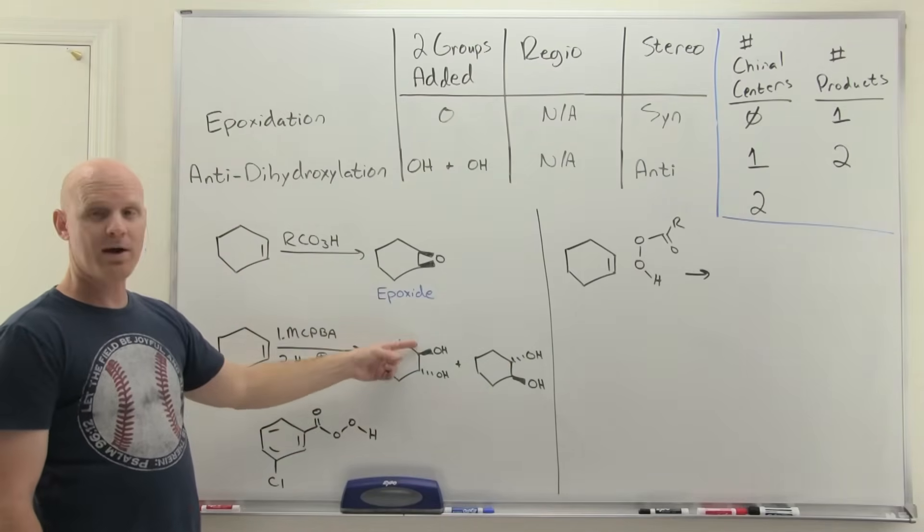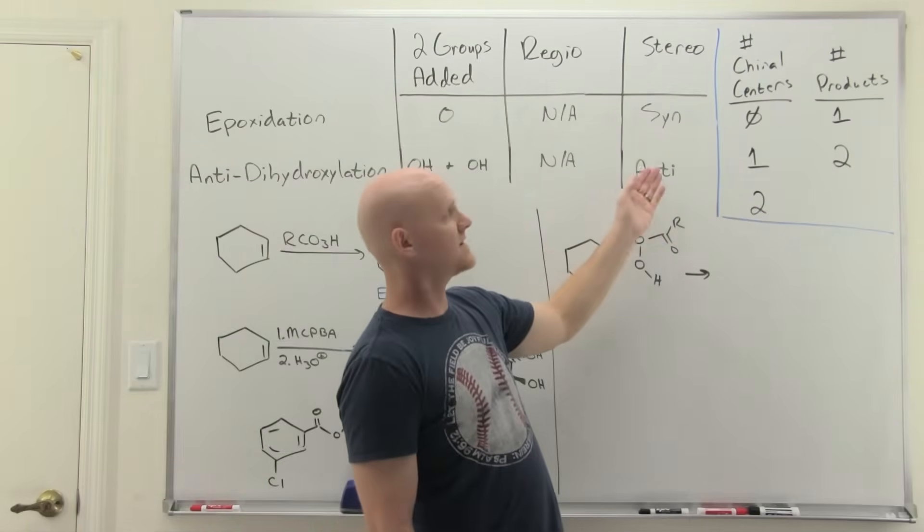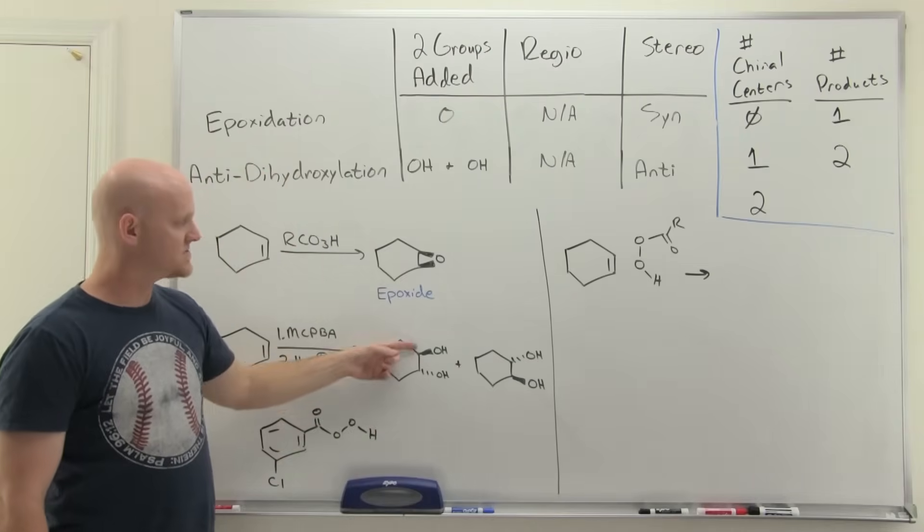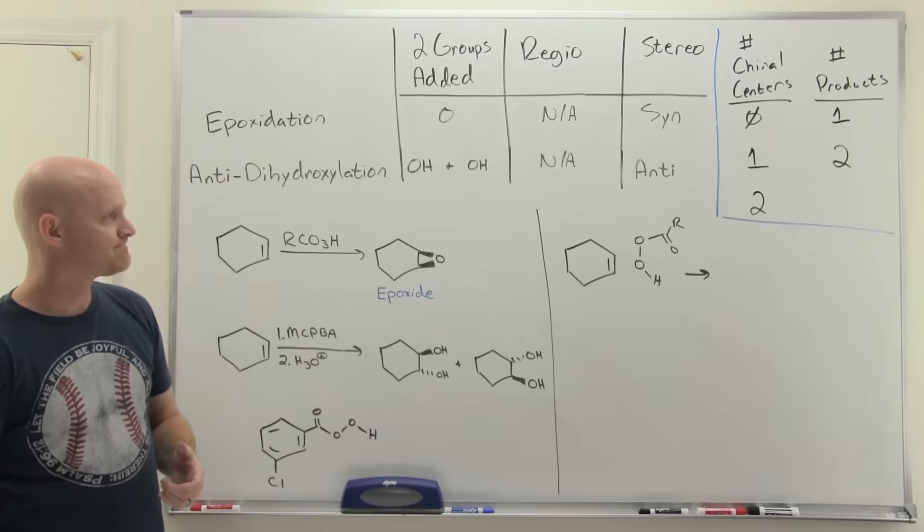In the second example, we did form two chiral centers and with two chiral centers, we had to worry about our stereo selectivity, which was anti. In this case, we only got the two anti products both trans, so a pair of enantiomers in this case.